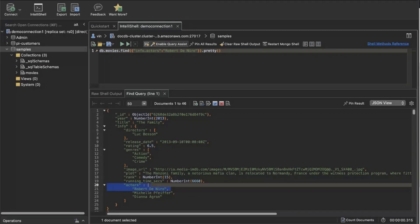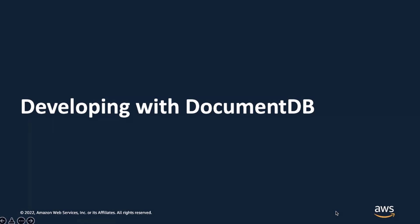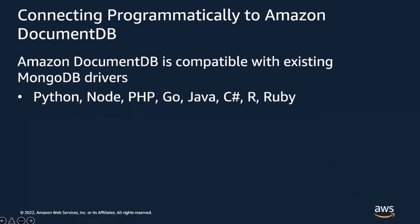That was how to create a cluster and connect to it from our tools — connecting from both a command line tool and a graphical user interface, inside and outside of a VPC. Now let's go into the next section: how you can build apps and develop against DocumentDB. To connect programmatically, you can actually use existing MongoDB application drivers. DocumentDB is compatible with them, so you can develop with the most popular languages such as Python, Node, PHP, Go, Java, C#, and much more.